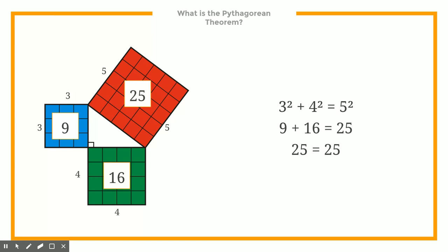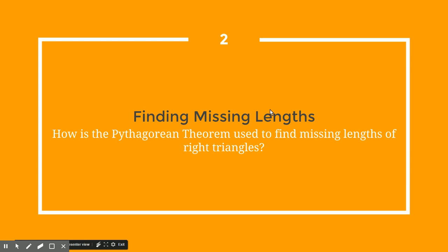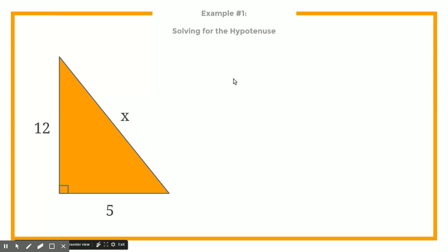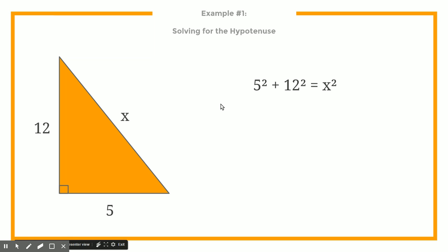This might seem a little confusing, but I think by the time you finish this video it'll start to make more sense. So let's actually do a little bit of math and try to find the missing lengths of right triangles. Let's say that we have a triangle but we want to figure out what this side length is. You want to use the Pythagorean theorem to figure this out. We just plug in those numbers — the two shorter sides go on the left side — but we don't know what the hypotenuse is, so we just use x as our variable.